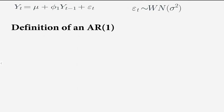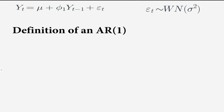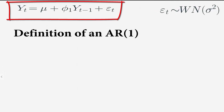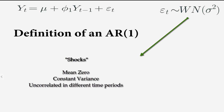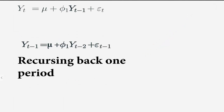We'll firstly start with the definition of an AR1. Yt equals a constant and depends upon Yt from last period, where epsilon t, which we can think of as a shock, is assumed to be a white noise process. This means mean zero, constant variance, and the shocks are uncorrelated in different time periods. So we'd like to write Yt as a function of all the past shocks, epsilon t.